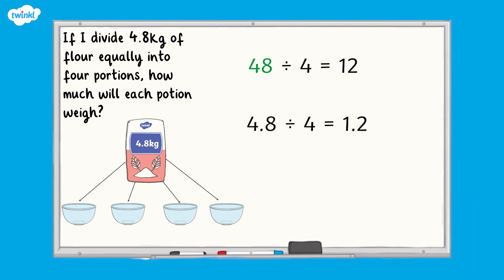When the number being divided becomes 10 times smaller, the answer also becomes 10 times smaller. So when 48 is made 10 times smaller to become 4.8, then the answer 12 is also made 10 times smaller and becomes 1.2.